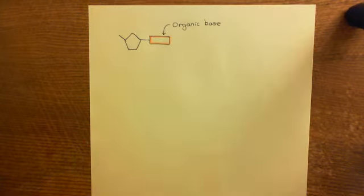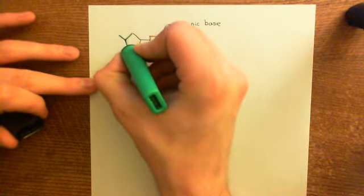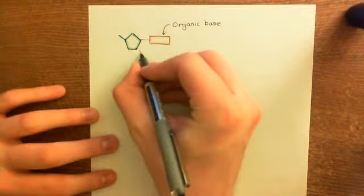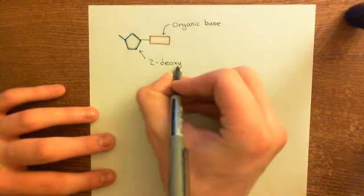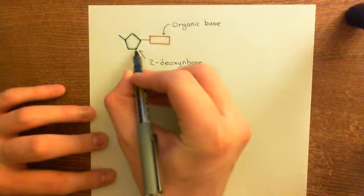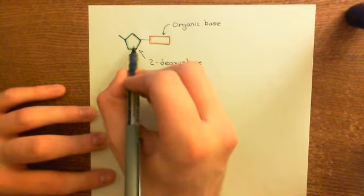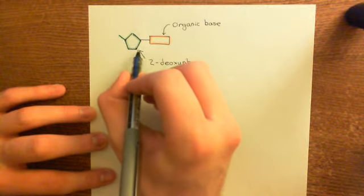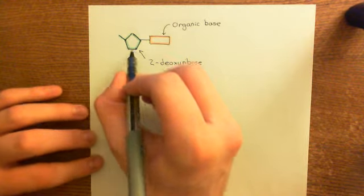Here in orange is the organic base, and the deoxyribose sugar is shown in green. We're talking about DNA, so this sugar is not ribose - it's deoxyribose, specifically 2-deoxyribose. What it means to be 2-deoxyribose is that you have taken the alcohol group off the second carbon. In ribose you have an alcohol group off the second carbon, but in deoxyribose you've removed that, so you've got two hydrogens coming off this second carbon.